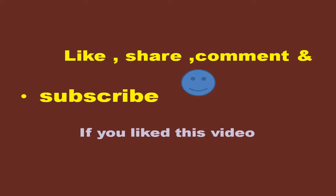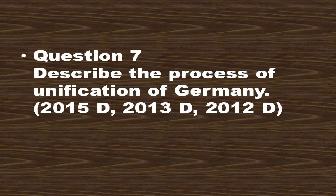Question number seven: Describe the process of unification of Germany. In the 18th century, Germany was divided into a number of states. Some of these states ceased to exist during the Napoleonic wars. At the end of the war there were still 39 independent states in Germany. Prussia was most powerful, dominated by big landlords known as Junkers. Nationalist feelings were widespread among middle-class Germans.